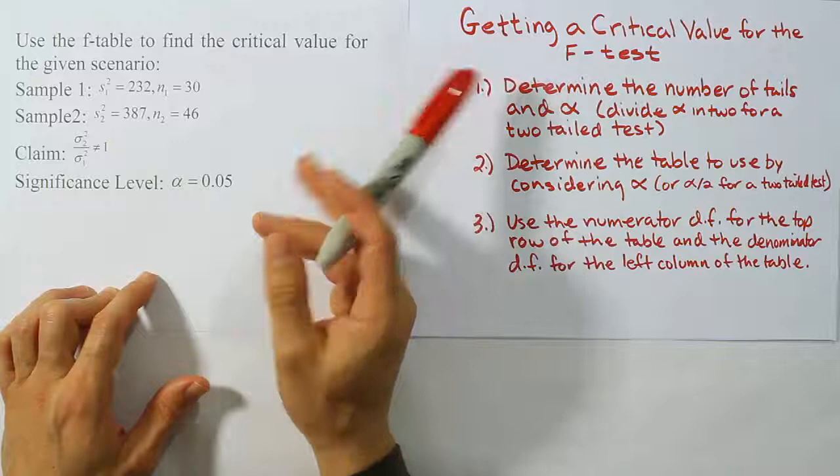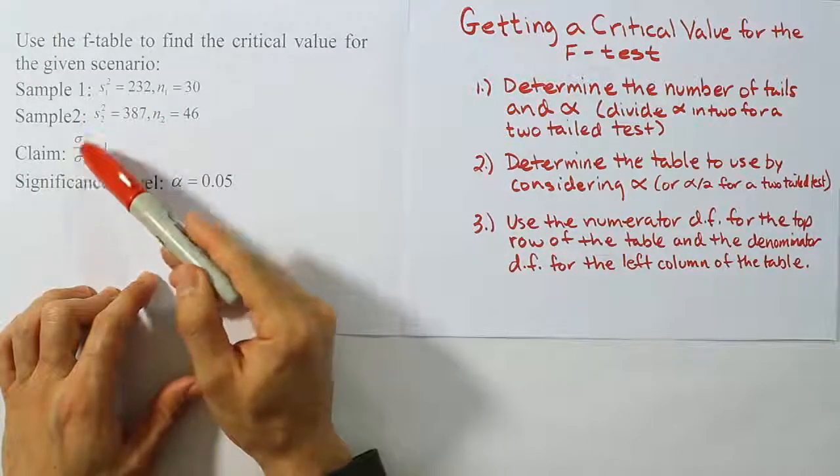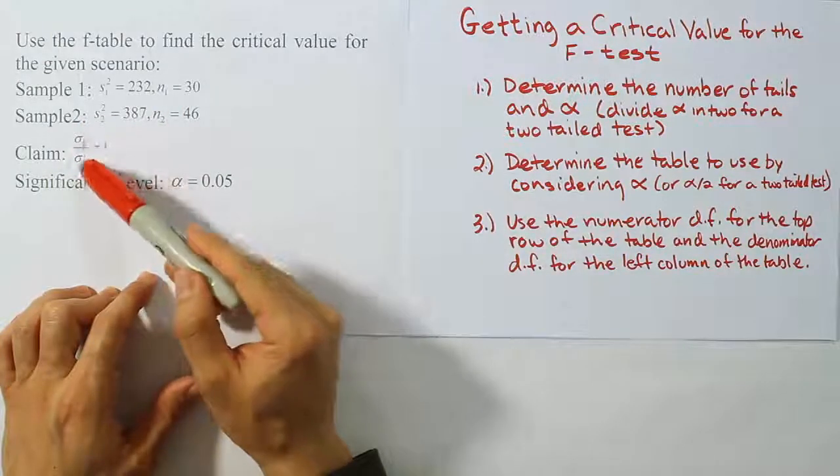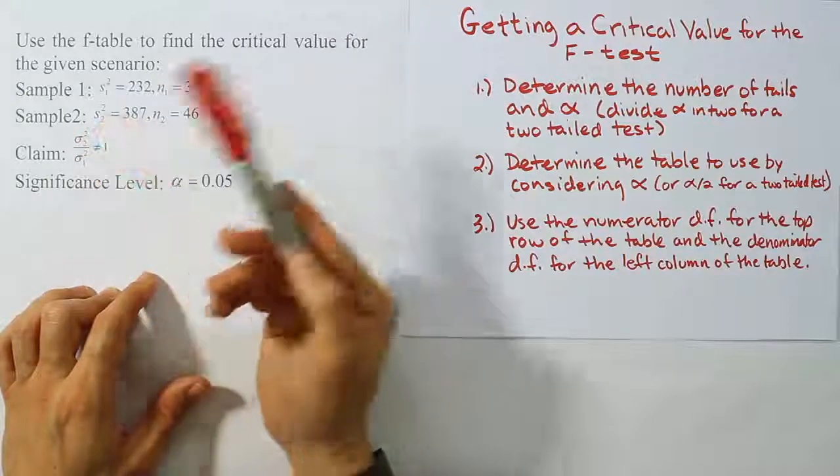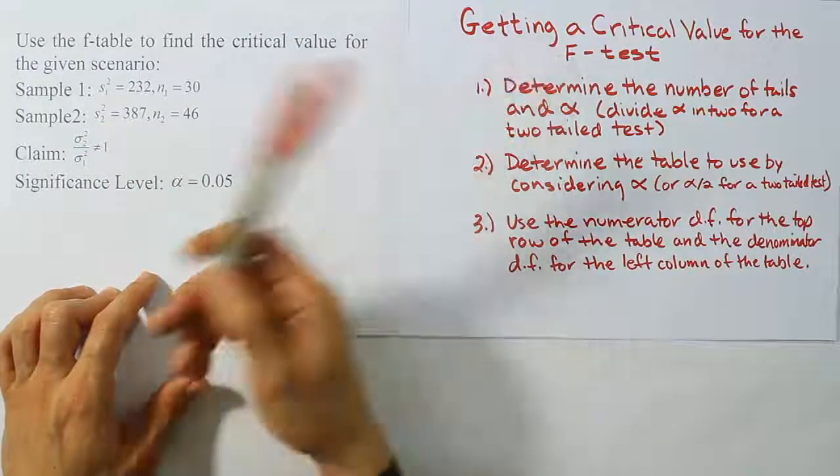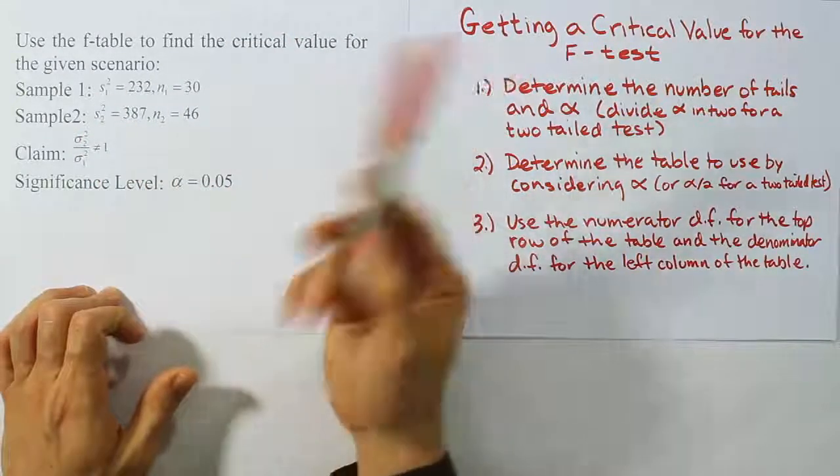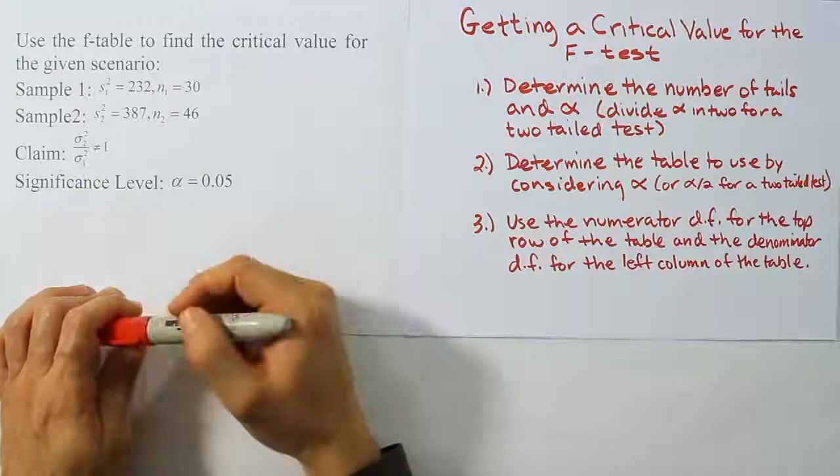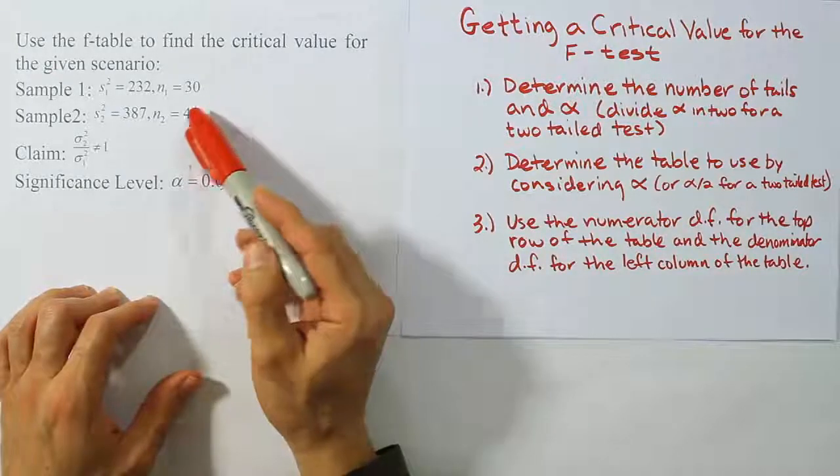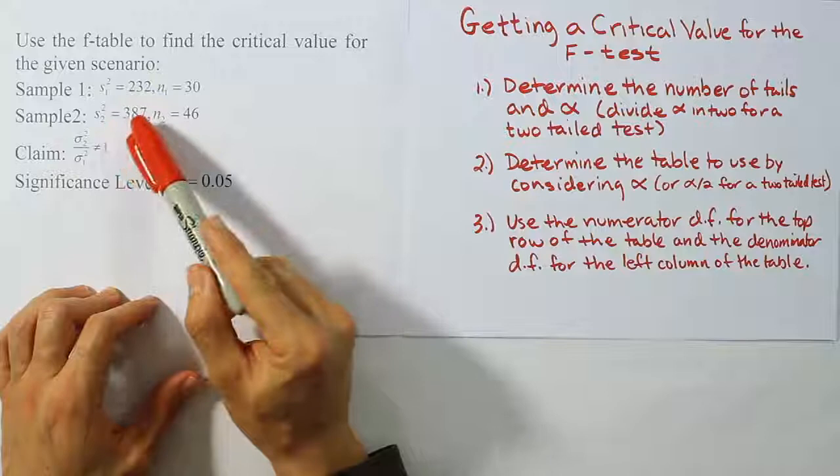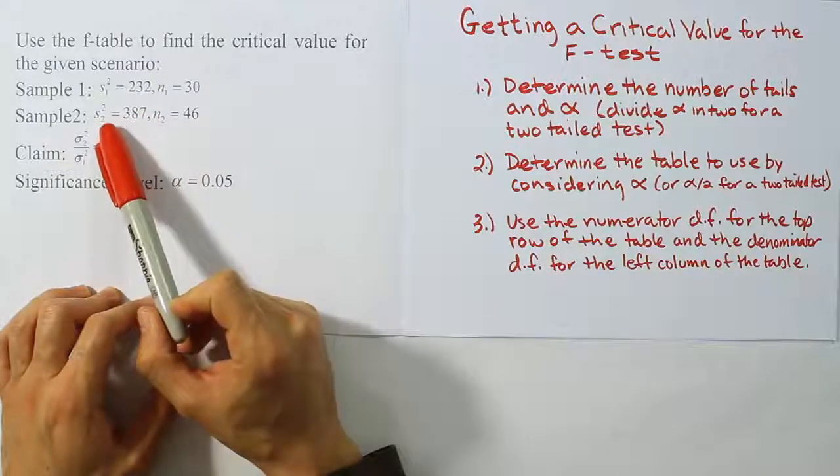Getting a critical value for the F-test. So whenever you're doing a hypothesis test about the population variances of two samples, or two populations, we're going to be conducting an F-test. The important thing to remember about an F-test is when we set up our test statistic for that test, we want to make sure that the population or the sample that has the larger sample variance goes on top.